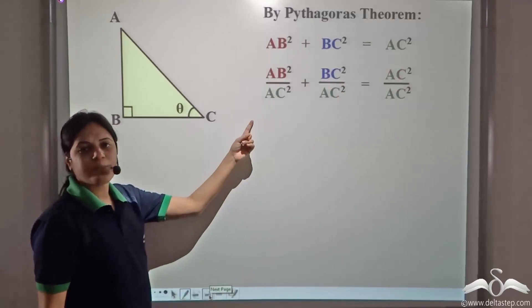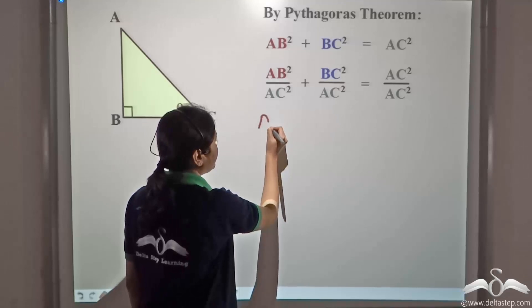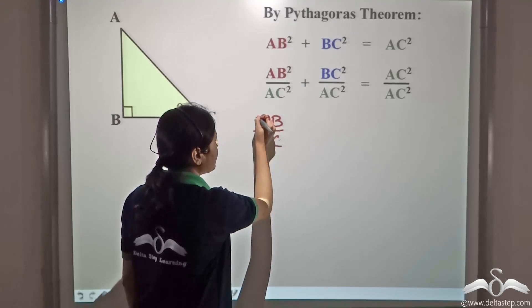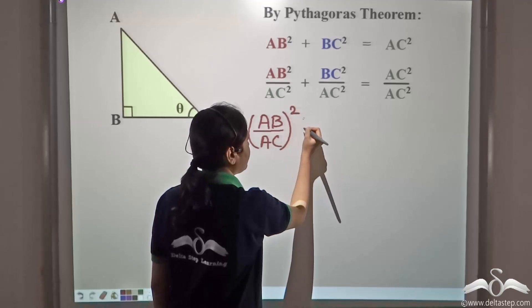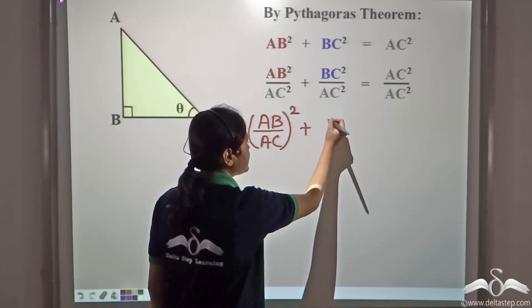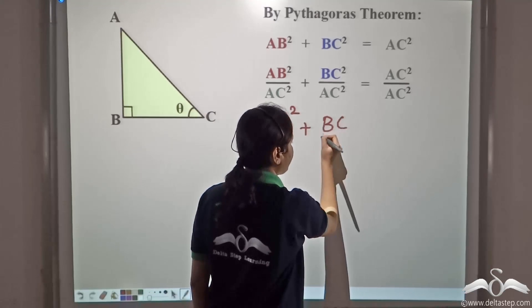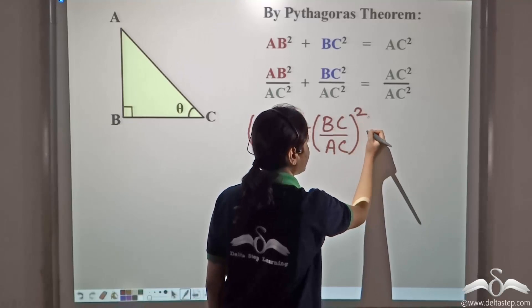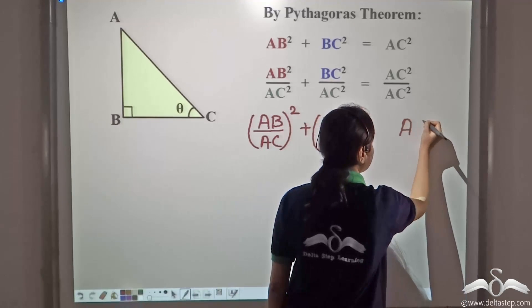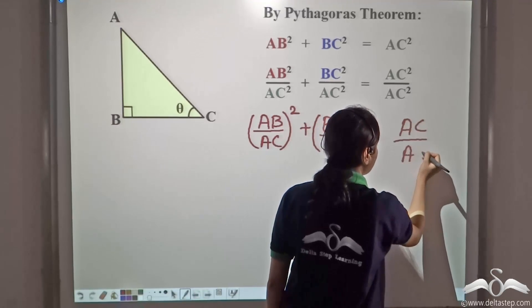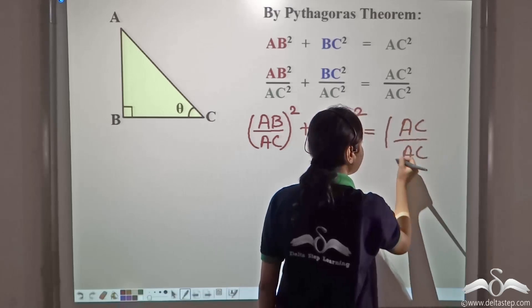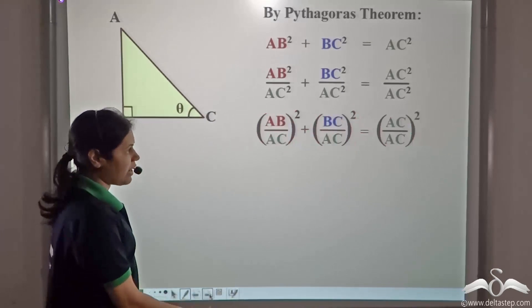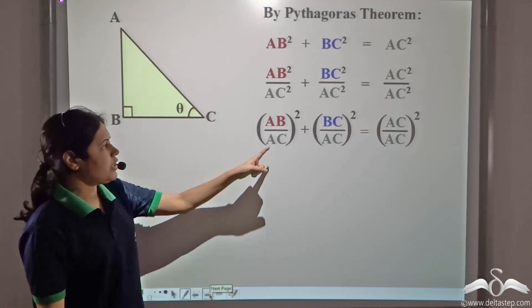From here, I can write (AB/AC)² plus (BC/AC)² equal to (AC/AC)². So, this is what we have.